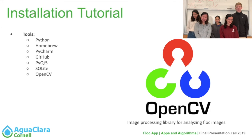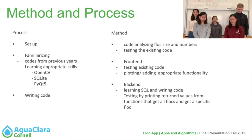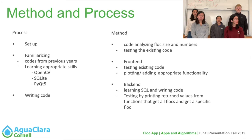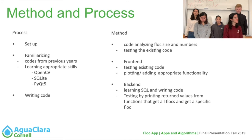The guide uses Homebrew, which is a package manager to help make all the installs easier and make everything go more smoothly, and it's designed for a Mac user. For our process, we started with the setup: we updated Python and Anaconda and installed PyQt and OpenCV. We also connected the computers in the lab because we thought that microscopic cameras only connect to the Windows settings. We familiarized ourselves with the previous code and learned the appropriate skills of OpenCV, SQLite, and PyQt through tutorials, and then we went on to writing our own code.